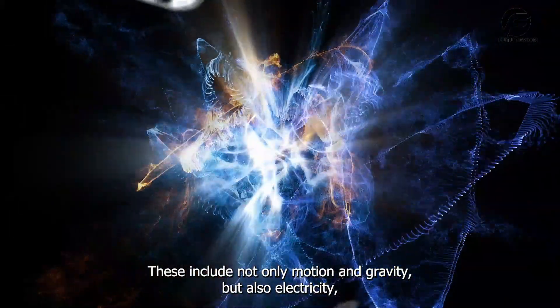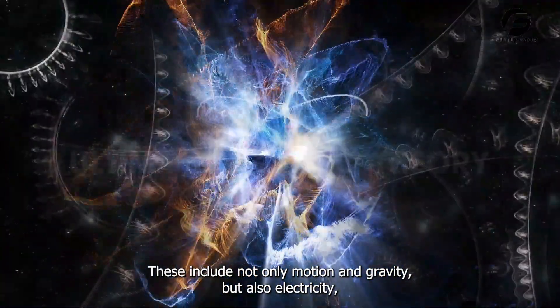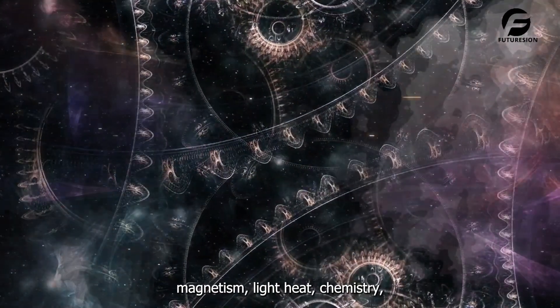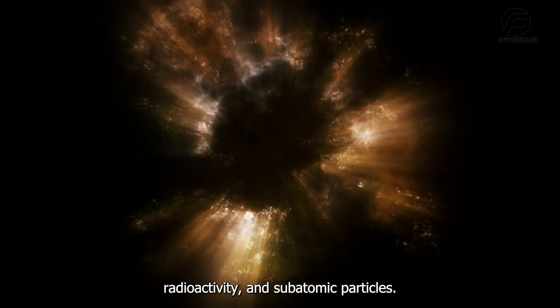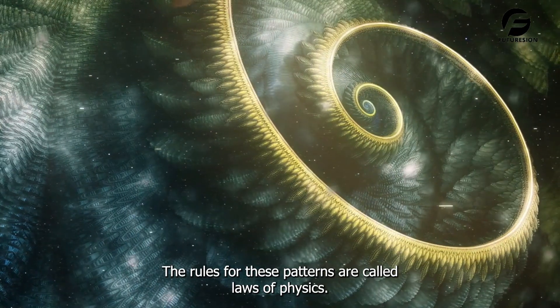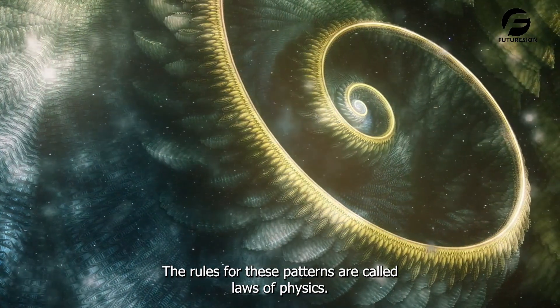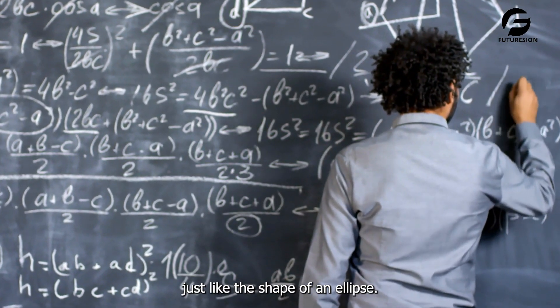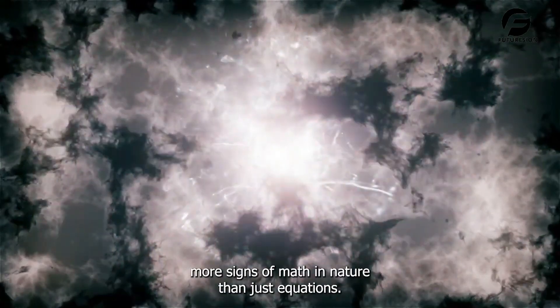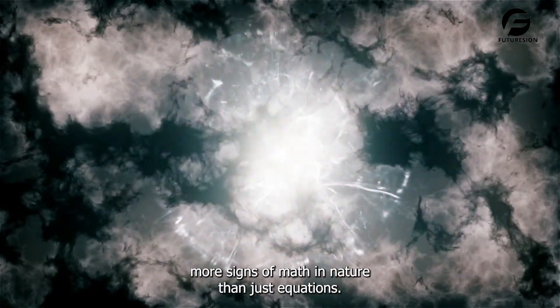We humans have slowly found more shapes and patterns in nature that happen over and over again. These include not only motion and gravity, but also electricity, magnetism, light, heat, chemistry, radioactivity, and subatomic particles. The rules for these patterns are called laws of physics. All of these laws can be described with math equations, just like the shape of an ellipse. There are more signs of math in nature than just equations. You can also find numbers.